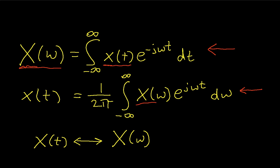But again, given a transform x of omega, this will give me x of t. And I represent the fact that x of t and x of omega are related through the Fourier transform by this notation.